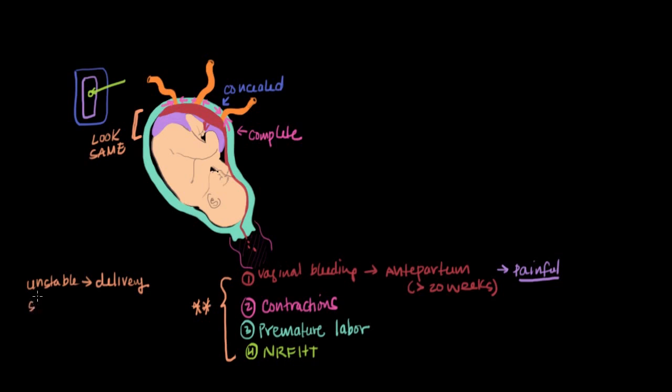On the other end of the spectrum, if the abruption is really minor and both mom and baby are looking good and the baby is too young to survive outside the womb alone, we can usually monitor both mom and baby until delivery is a safe option.